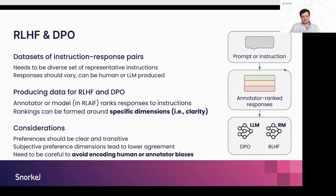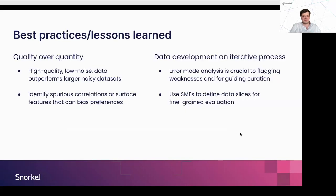For RLHF and DPO, diverse instructions are again important. When coming up with preferences, it's very important to have clear dimensions you're trying to assess preference over. For example, using a specific dimension like clarity is better than asking to pick which response is better across all dimensions. If your dimension is subjective, you can end up with a lot of noise. Having well-defined preference dimensions is the way forward to better preference datasets and better alignment outcomes. Where humans or models create rankings, it's important to avoid encoding human or model bias — for example, a reward model might always prefer longer responses regardless of content.